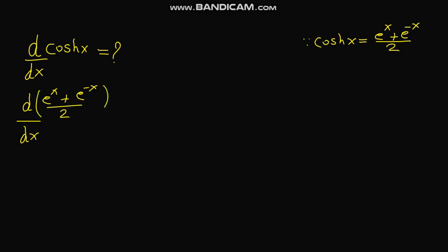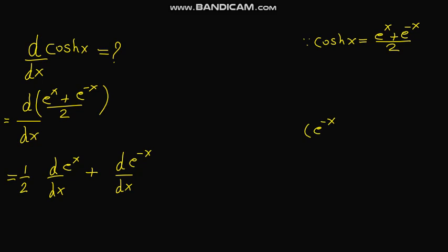Since 1 upon 2 is a constant, we put it outside the derivative. We then find the derivative of e to the power x with respect to x, plus the derivative of e to the power negative x with respect to x. The derivative of e to the power x is e to the power x, and the derivative of e to the power negative x is negative e to the power negative x. So we get e to the power x minus e to the power negative x, upon 2.